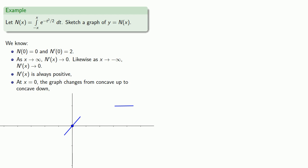If we go way off to the right, our slopes are getting close to 0, so our tangent lines look horizontal. And similarly, if we go way off left. The derivative is always positive, so the graph is always rising. At x equals 0, the graph changes from concave up to concave down.